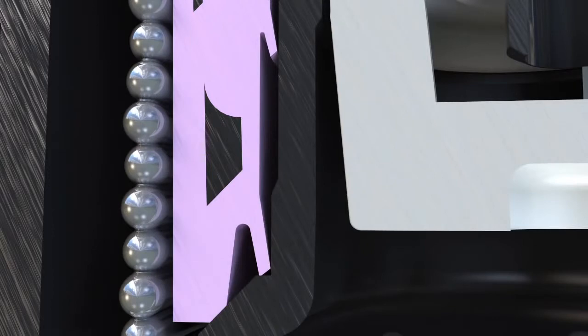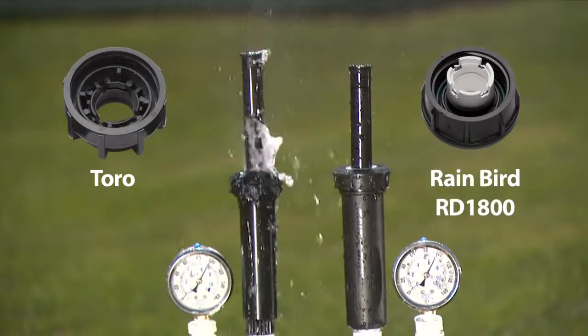During operation, the RD1800's primary seal combines with the stem's stepped surface to form a zero flow-by seal. What does this technology mean for you?